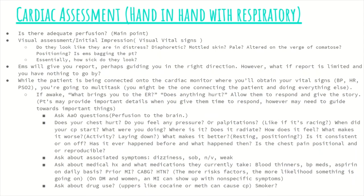If the patient is awake, we're going to gather our information from them. Simply asking 'What brings you to the ER today?' or 'How can we help?' — most patients will provide all the information we need. We'll begin by asking the alert and oriented questions: What is your name? What year is it? Where are you? What brought you to the hospital? These tell you that the patient is having adequate perfusion to the brain and is able to think and recall.